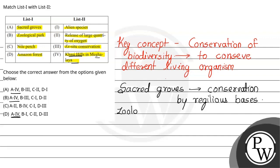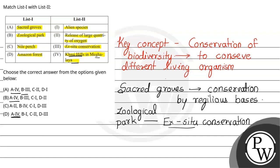Second is Zoological Park. Zoological park is also a kind of ex situ conservation — where an organism is taken from its natural environment and kept safely in a different environment. That is zoological park, so B is 3.